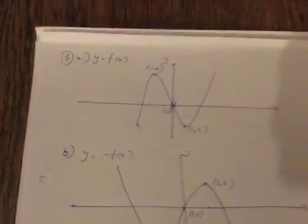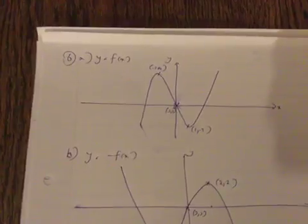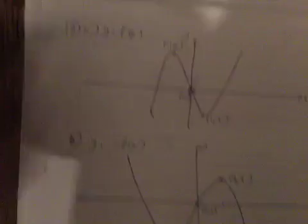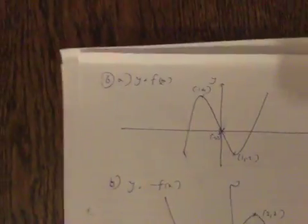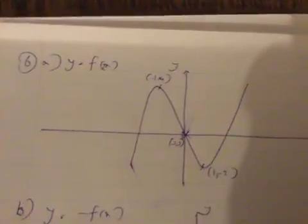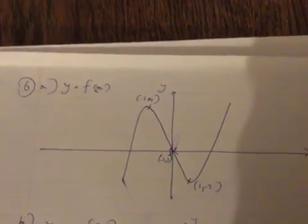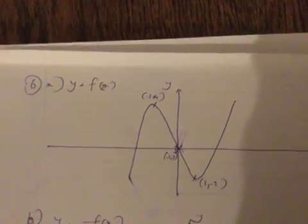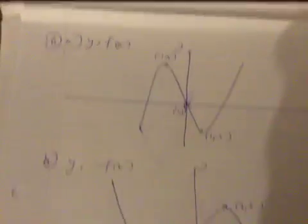Question 6a: f(2x) means all x-coordinates are halved. So the coordinates become (-1, 4), (0, 0), (1, -2), and we draw the graph accordingly.